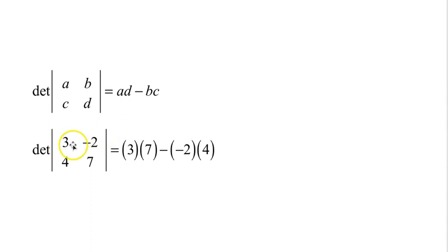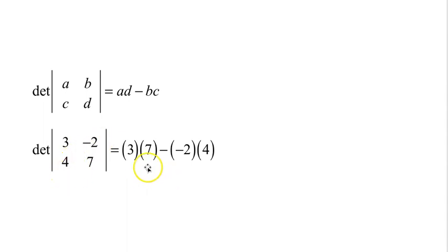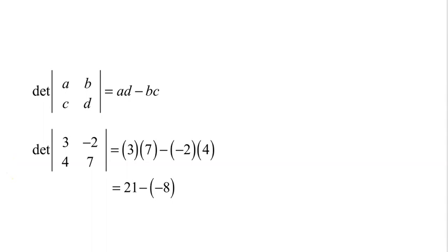So if I have the determinant of [3, -2; 4, 7]: multiply 3 times 7 minus negative 2 times 4. So 3 times 7 is 21, negative 2 times 4 is negative 8. 21 minus negative 8 is 21 plus 8, or 29. So the determinant of that matrix is 29.